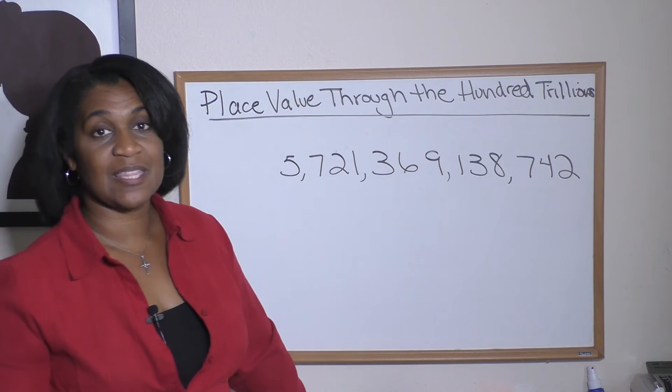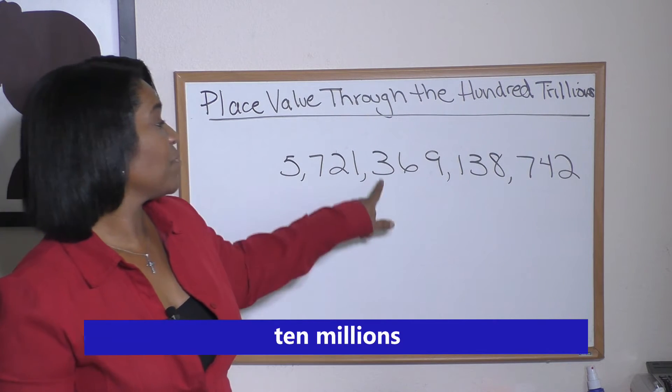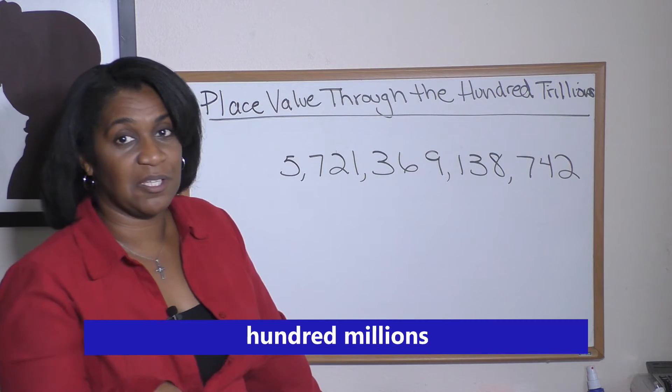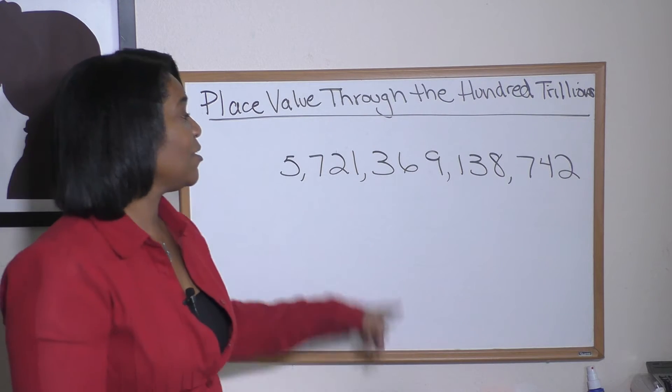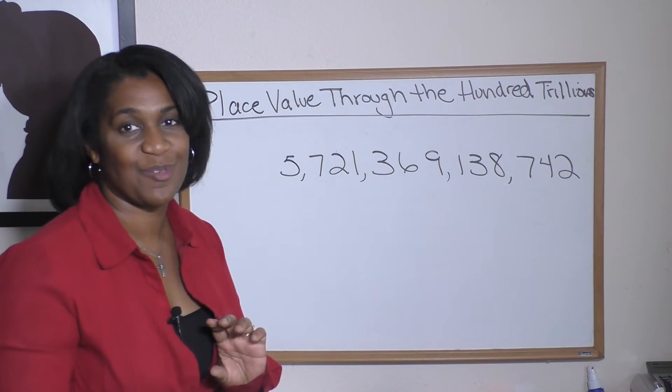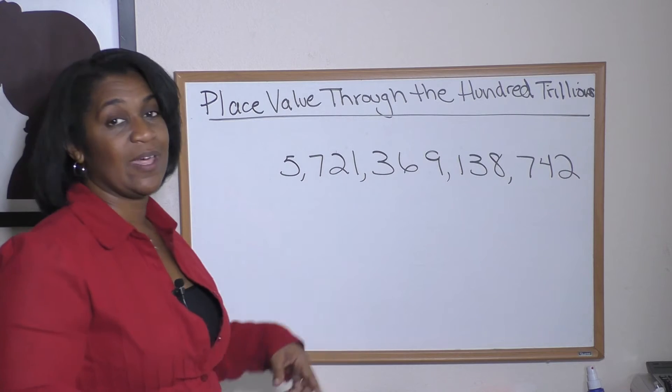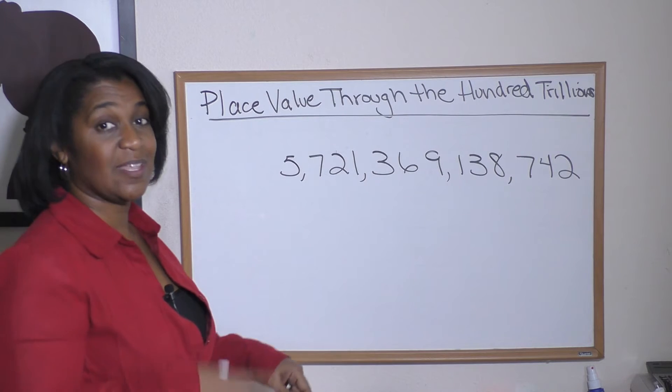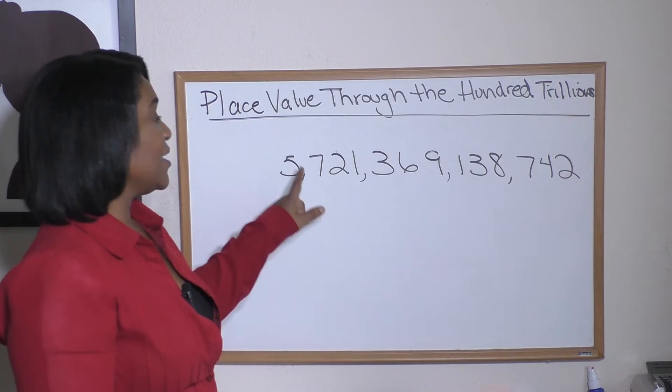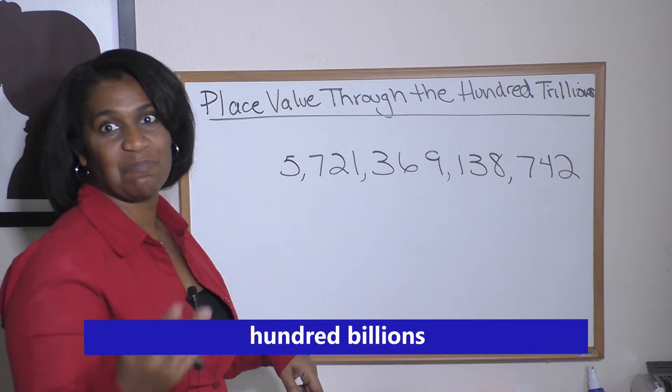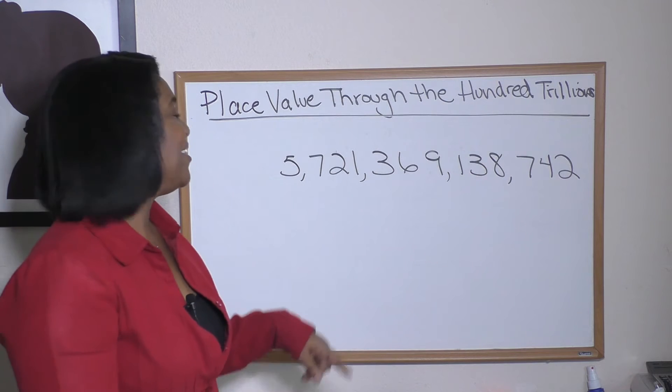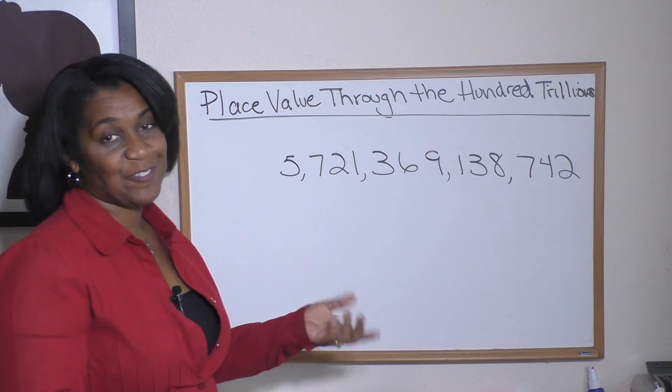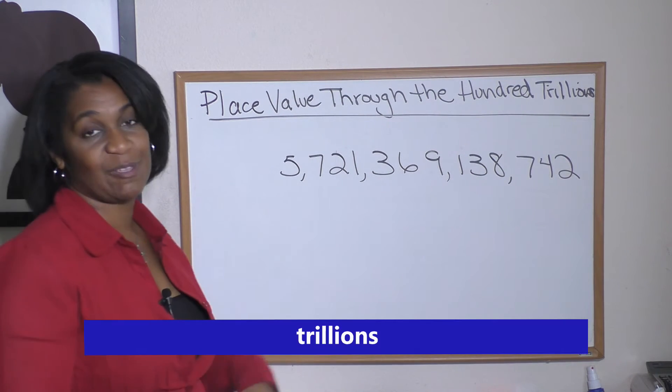Hopefully you're seeing the pattern. Wait, we hit a comma, so things change. We're now in the billions. One is in the billions, two is in the ten billions, seven is in the hundred billions.